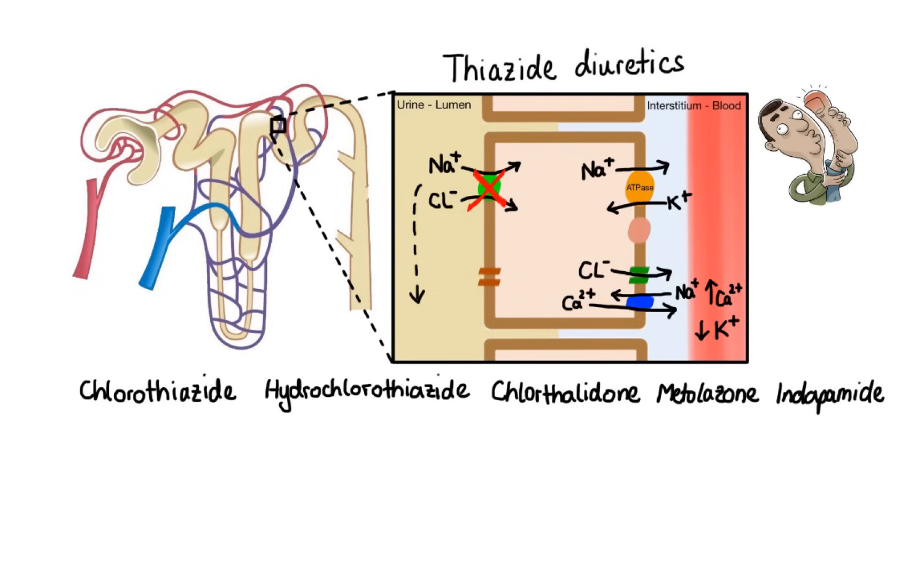Lastly, thiazides may worsen glucose control, leading to hyperglycemia, and they may also elevate cholesterol, leading to hyperlipidemia. Some of the mechanisms thought to be responsible for these effects include decreased insulin secretion and insulin sensitivity, as well as increased hepatic glucose production.